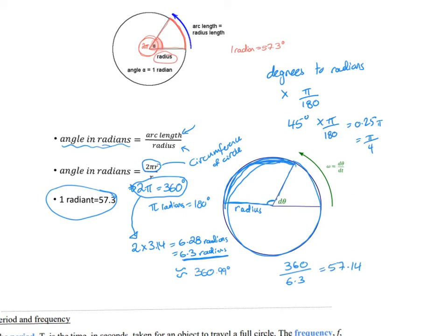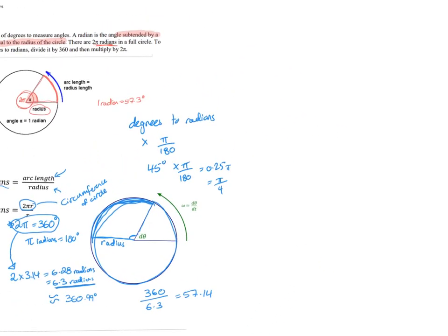Another example: if a spinning top completes eight full revolutions before coming to a stop, and we need to express that angle — eight full revolutions means it went around eight times, and one full circle is 2π radians, so that's 16π radians. Expressed in degrees, that's 8 × 360 = 2880 degrees. It's just about expressing the total angle moved through in degrees or radians.